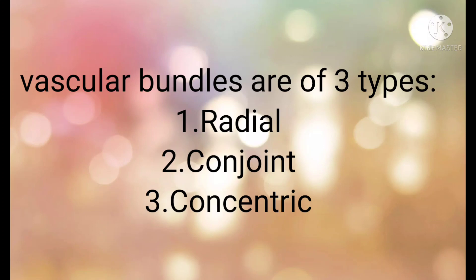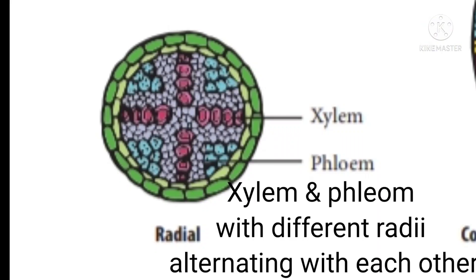First, radial vascular bundles. The main components are xylem and phloem. In radial vascular bundles, xylem and phloem lie at different radii, alternating with each other.